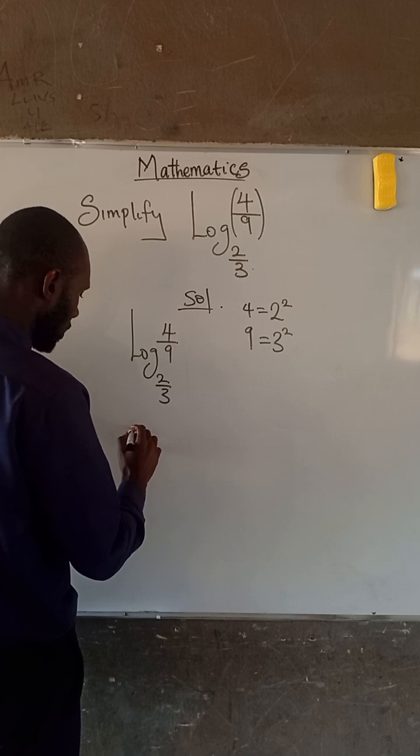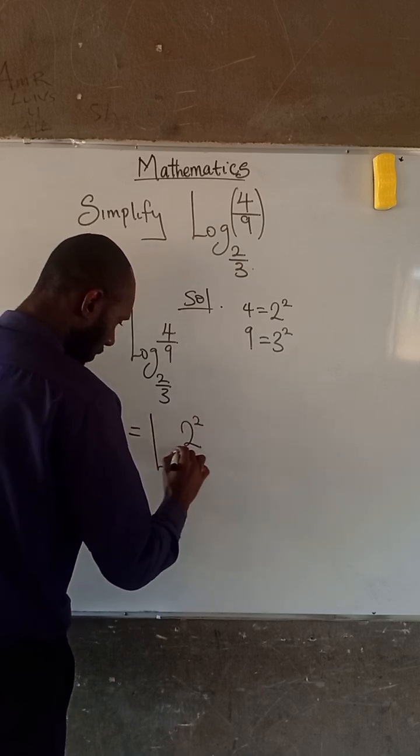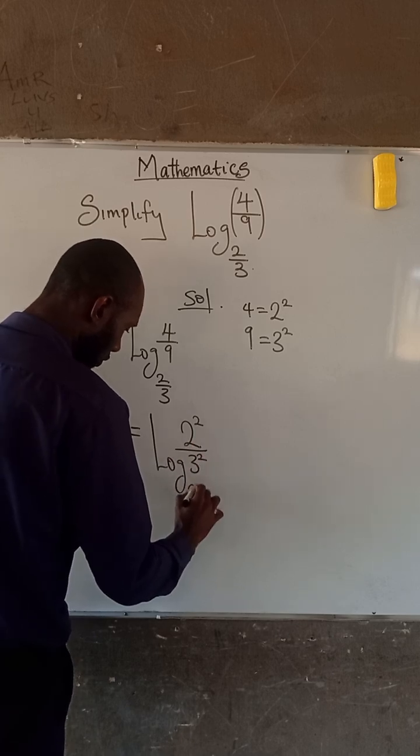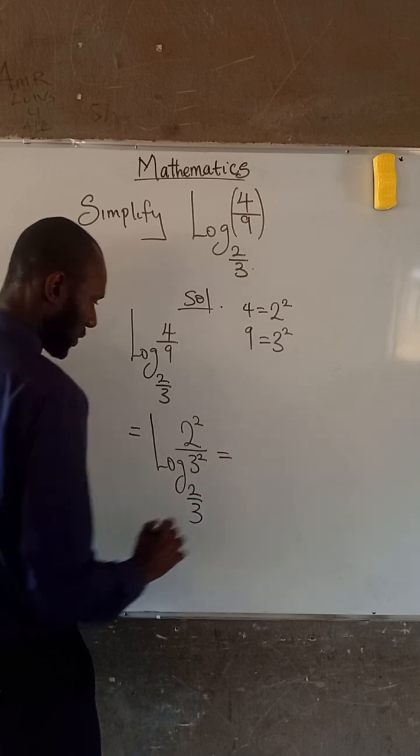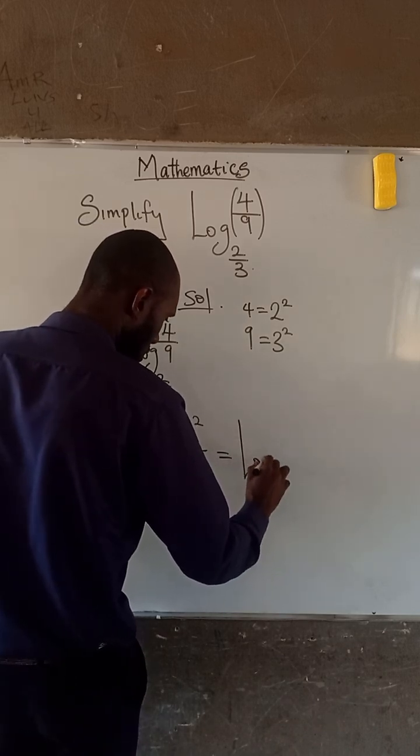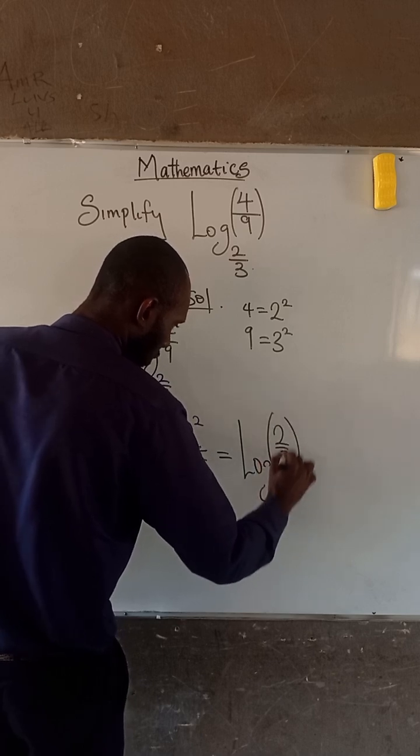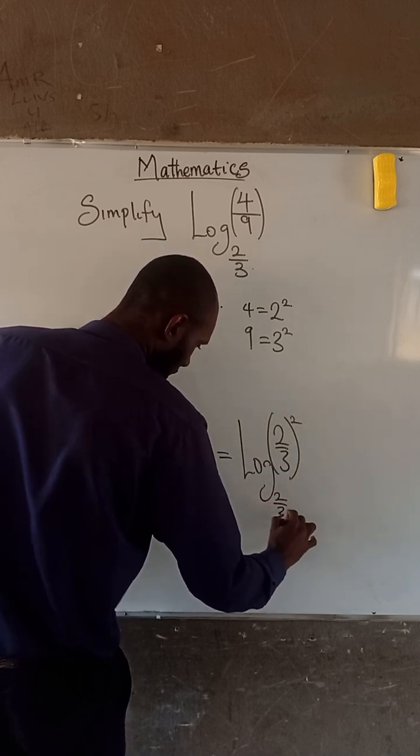Therefore this becomes log of 2 to the power of 2 divided by 3 to the power of 2, with base 2 divided by 3. At this point, this becomes log of 2 divided by 3, all to the power of 2, in base 2 divided by 3.